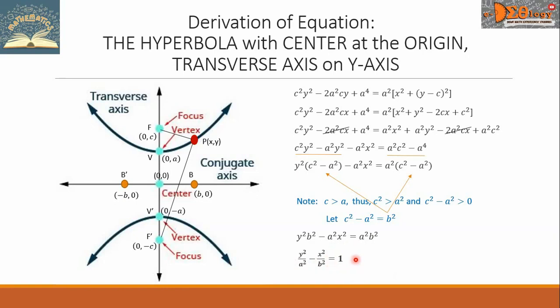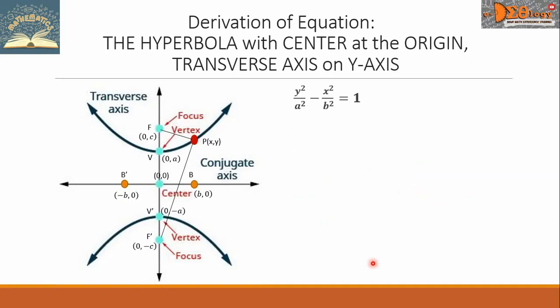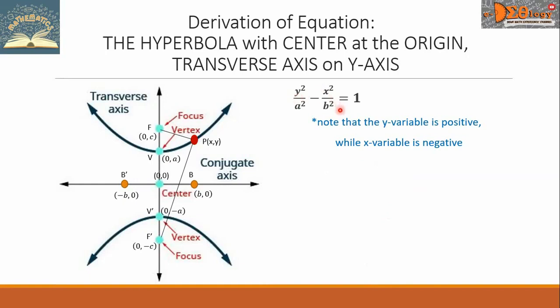This is the equation of the hyperbola with center at the origin and the transverse axis on the y-axis. Note that the y variable term is positive while the x variable term is negative.